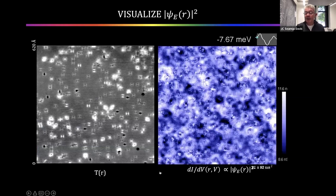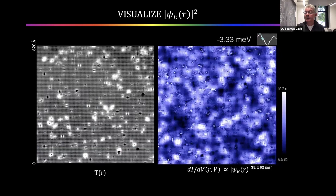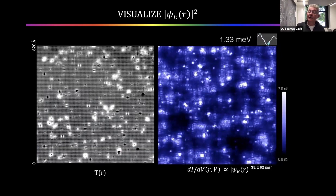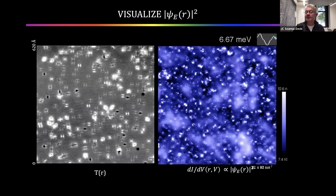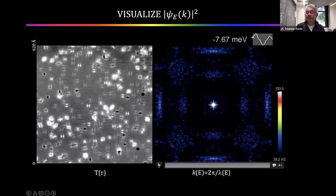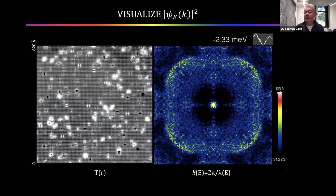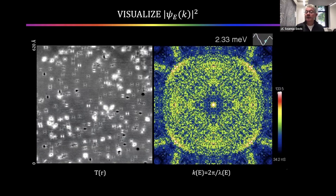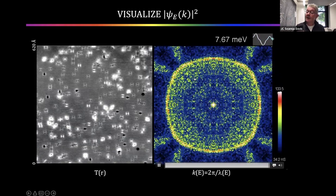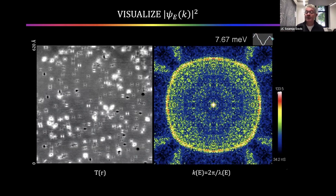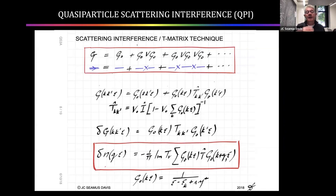If you take the Fourier transform of that highly disordered electronic structure of lithium iron arsenide, it looks much more ordered. Inside the gap of the superconductor, when we exit from the gap, we see a nice contour — that contour is the Fermi surface. It's the wavelength of all the electrons which are at the chemical potential of this compound. So even from a disordered real-space image, by using Fourier analysis and theory you can deduce the de Broglie waves in momentum space.